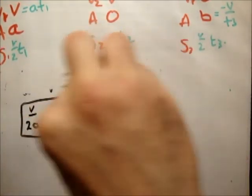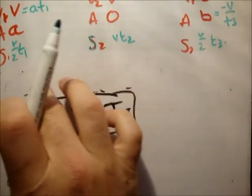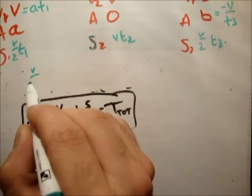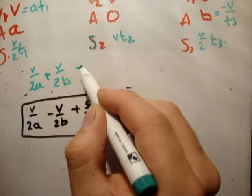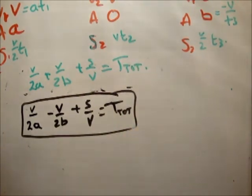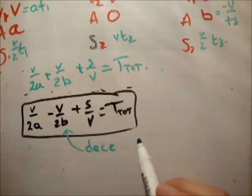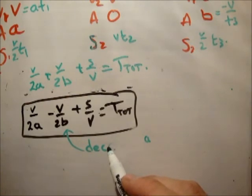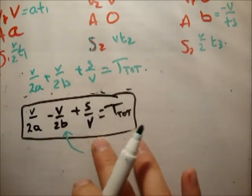Now if you want, you can have a look at the answer on page 62 and see that we're getting close. So we're seeing things that are similar. So finally, we know that T2 is equal to S over V plus V over 2B minus V over 2A. Like that. So now we have an expression for T2, an expression for T1, and an expression for T3.